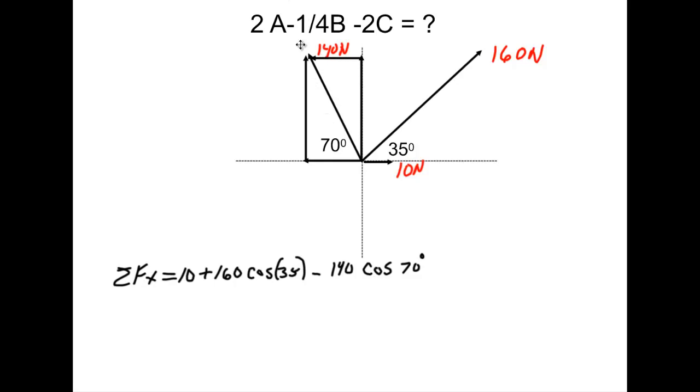So we'll go ahead and get rid of these. So that's where I get the negative 140. And the reason I use the cosine, again, because this side is adjacent to the 70. We'll run that through our calculator, and I believe when I do that, we get 93.18 newtons.